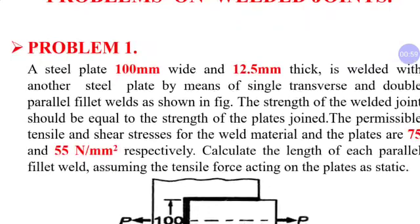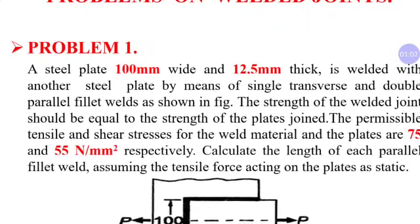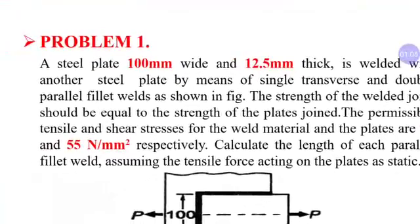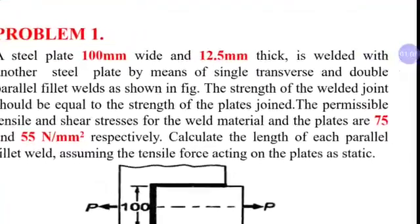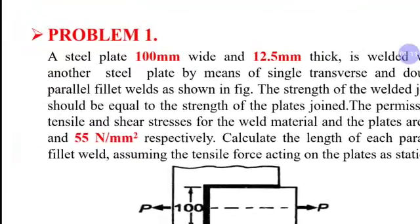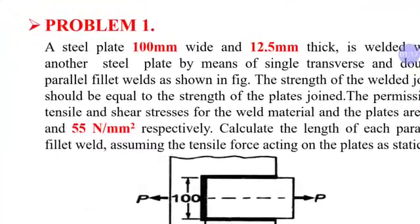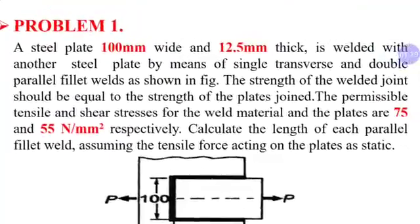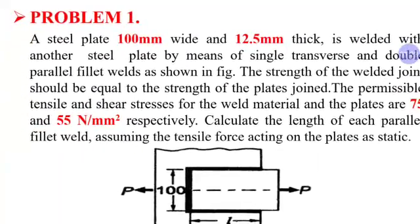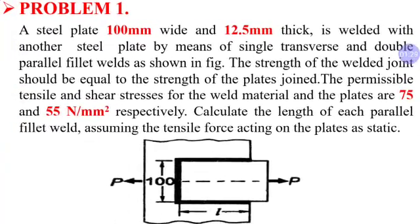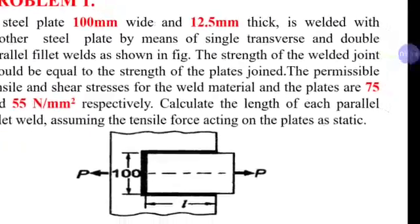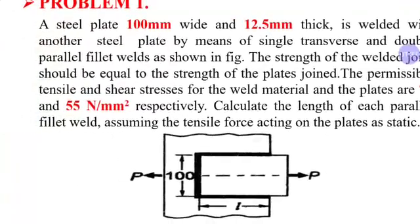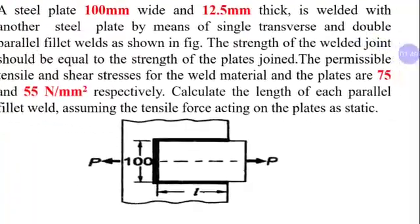Problem: A steel plate 100 mm wide and 12.5 mm thick is welded with another steel plate by means of single transverse and double parallel fillet weld. Assume figure. The strength of the weld joint should be equal to the strength of the plate. The permissible tensile and shear stress for the weld material and the plates are 75 N/mm² and 55 N/mm² respectively. Calculate the length of each parallel fillet weld, assuming the tensile force acting on the plates as static.